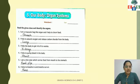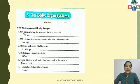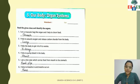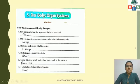Number three: I help the body to get rid of its waste — the organ is the kidneys. Number four: I help to pump blood to the body — the answer is the heart. Number five: I am a thin tube which carries food from the mouth to the stomach — that is the food pipe. Number six: I help to breathe in and breathe out air — the answer is the nose.